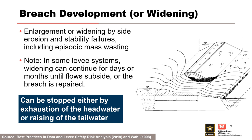In the final phase, the breach has usually reached its full depth and continues to widen as long as the driving hydraulic head is available. Widening is accomplished through a combination of foundation and structure erosion and stability failures, which includes episodic mass wasting of material from the banks of the developing breach. The widening can be stopped either by exhaustion of the head water or raising of the tail water that reduces breach inflow to non-erosive velocities. In some levee systems, widening can continue for days or months until flows subside or the breach is repaired. The end breach time in the HEC-RAS model can occur before the true end of the breach widening phase, as the hydraulic model typically only cares about the main part of the formation and widening phase.